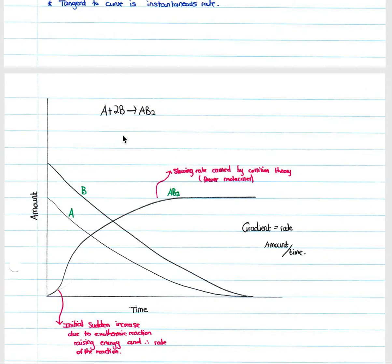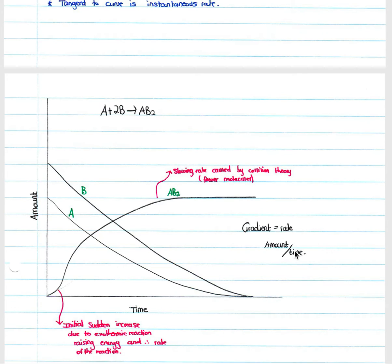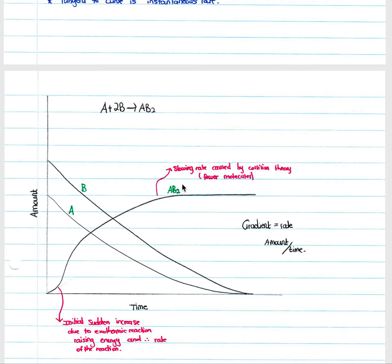For the same reaction A + 2B → AB₂, plotting the amount of each substance shows A and B both decrease to zero. Initially B is present in greater amount due to the 2:1 stoichiometric ratio. In some graphs, products increase steeply at first — this initial surge is due to the exothermic reaction raising energy and increasing the reaction rate. The slowing rate of product formation is explained by collision theory: fewer reactant molecules means fewer effective collisions.